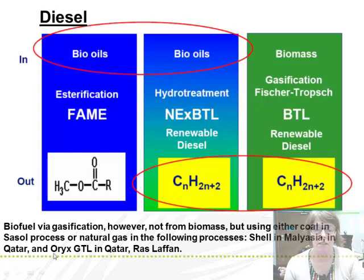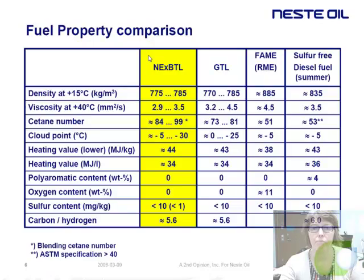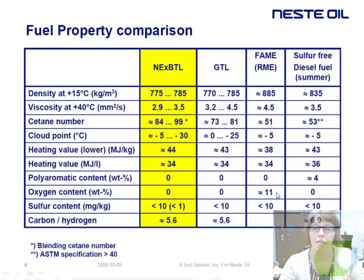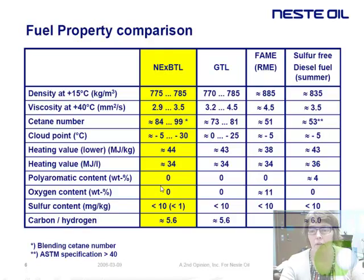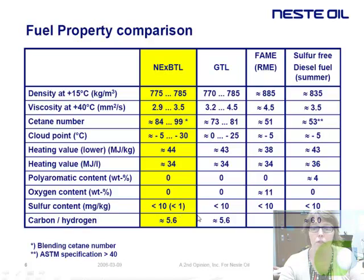Existing plants are in Malaysia, Qatar, and Ras Laffan. In this talk I will concentrate mainly on hydrotreatment and catalytic deoxygenation to make green diesel. Here is one slide from Neste Oil, a Finnish oil refinery, showing the difference in NExBTL, FAME quality, and conventional diesel. The biggest difference is oxygen content — FAME contains quite a lot of oxygen, which also causes some corrosion in motors, and in Finland it can only be blended into fuel. What is also good for these renewable sources is that sulfur content is typically quite low.